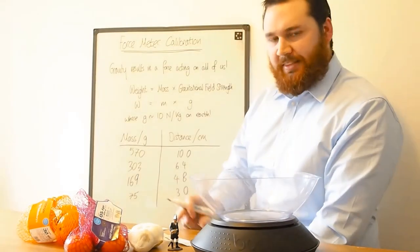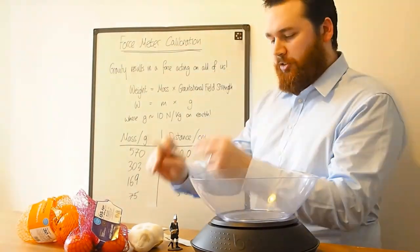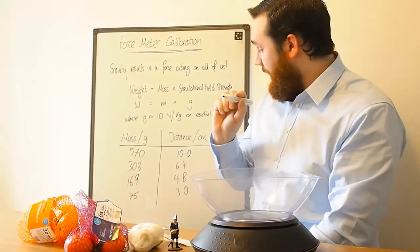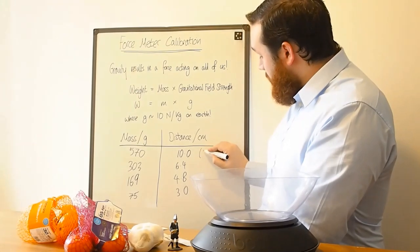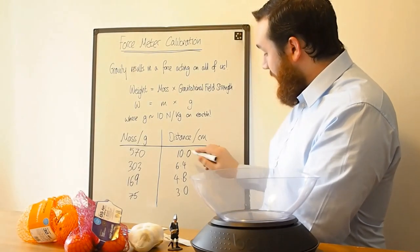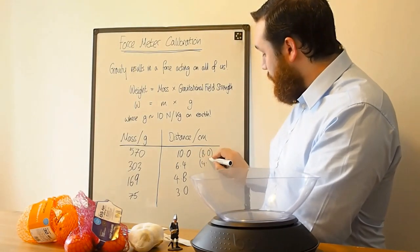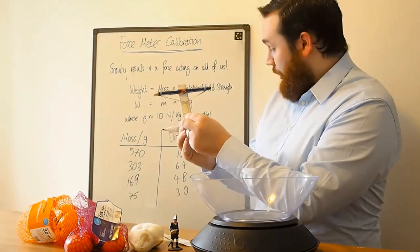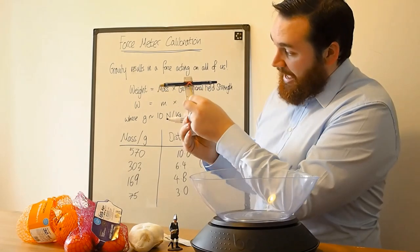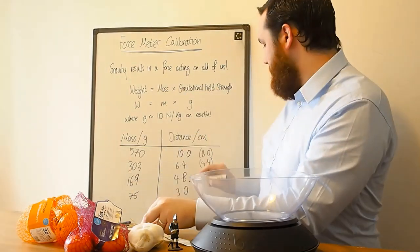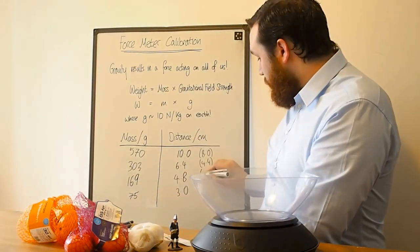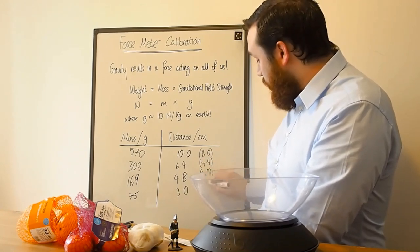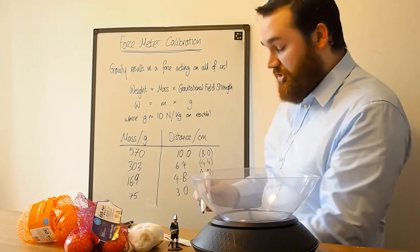And I can write 6.4 centimeters. Now can you remember when we made this that I actually set it so that it was just about 2 centimeters where the elastic band was sat. So I actually need to take away 2 from each of these. So that becomes 8. This becomes 4.4 because the elastic band hasn't actually moved 10 centimeters on that one. It's only moved 8 because it's gone from 2 to 10.